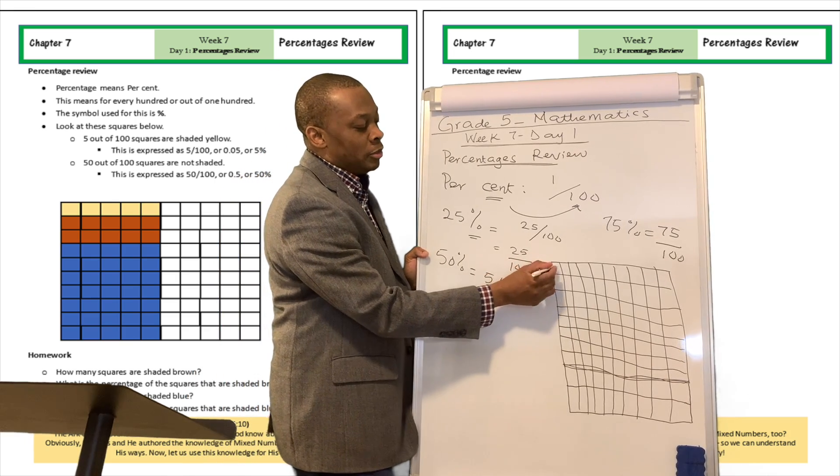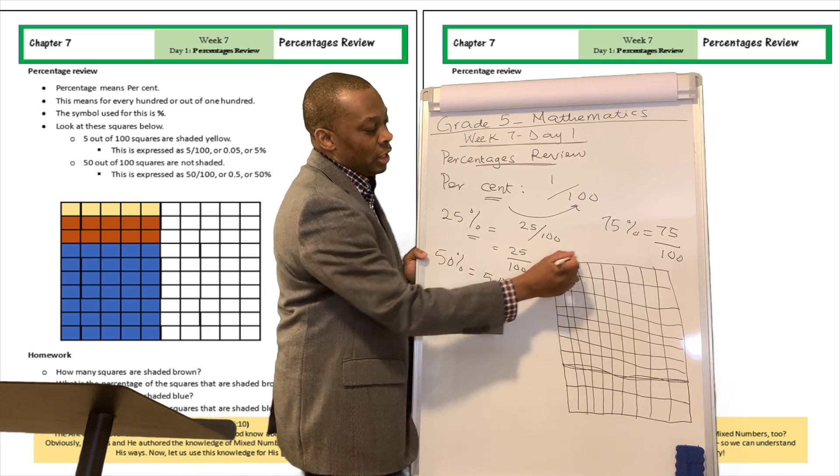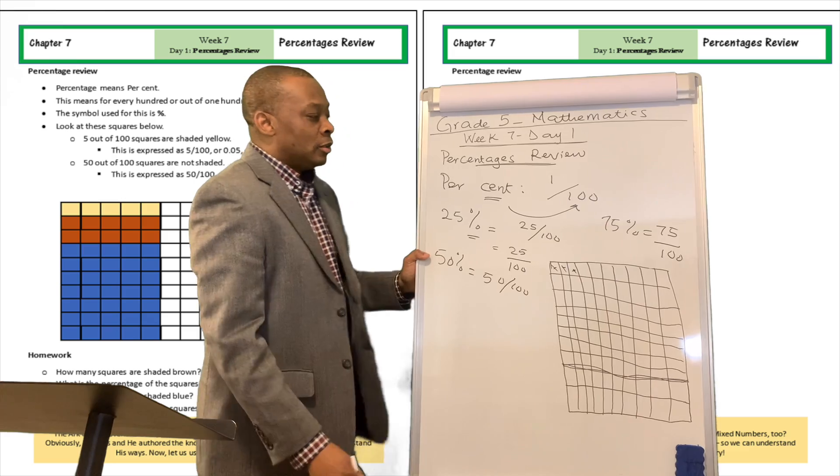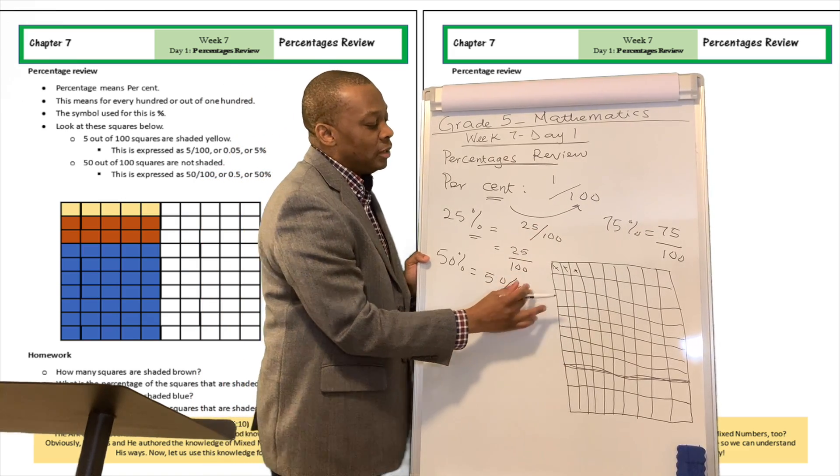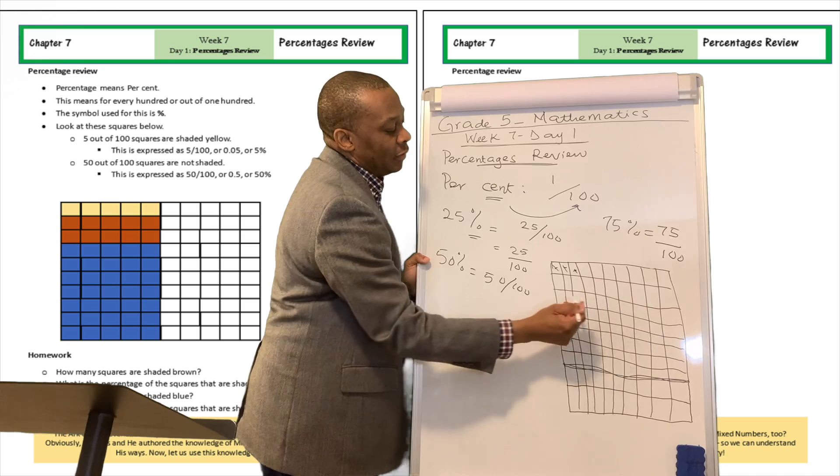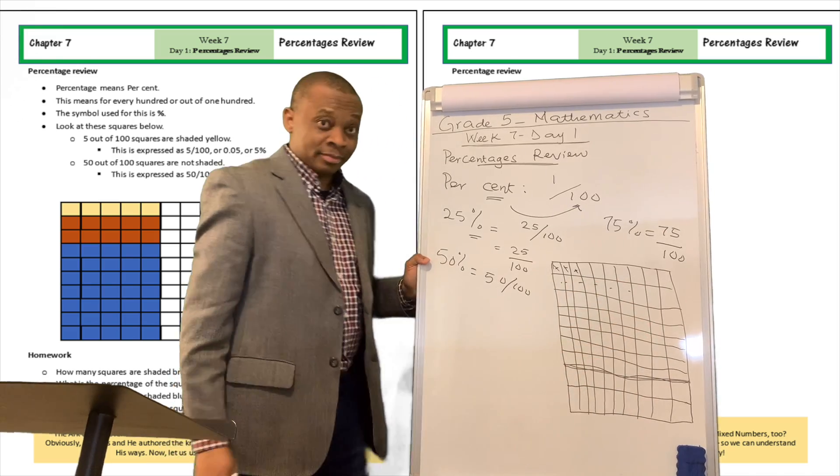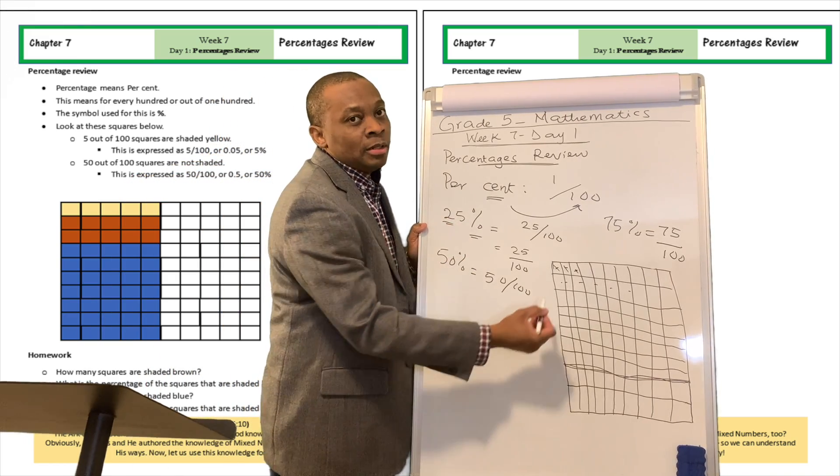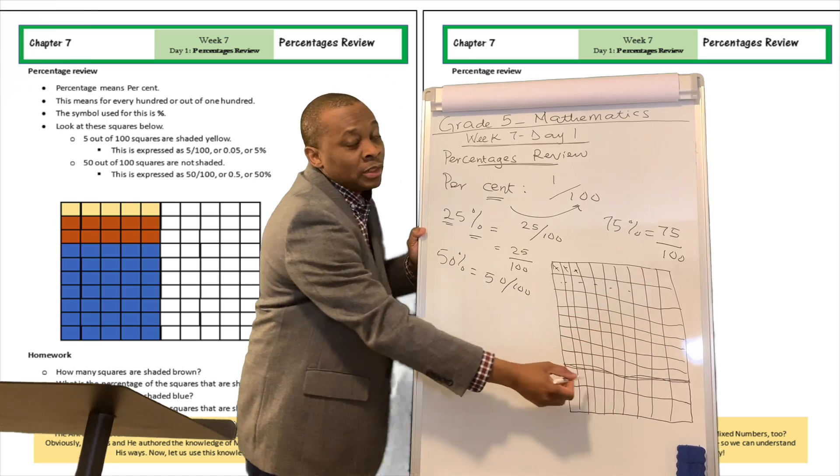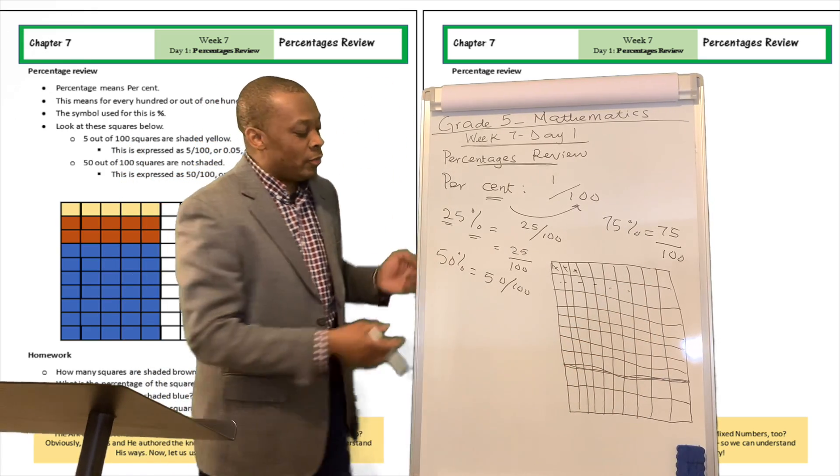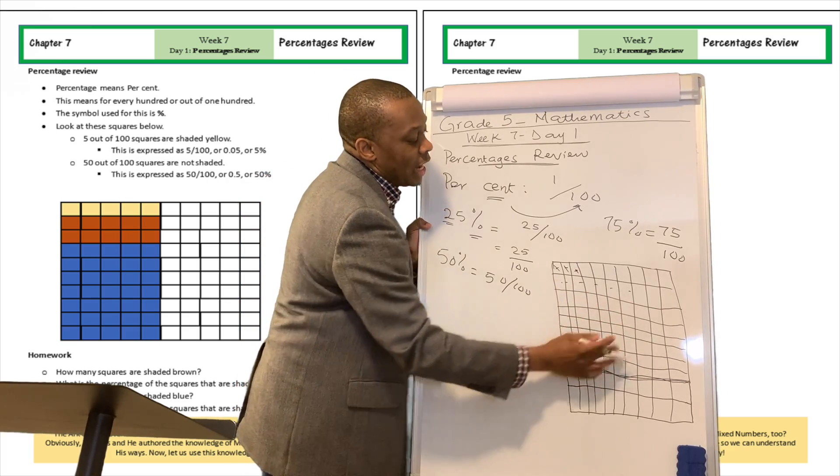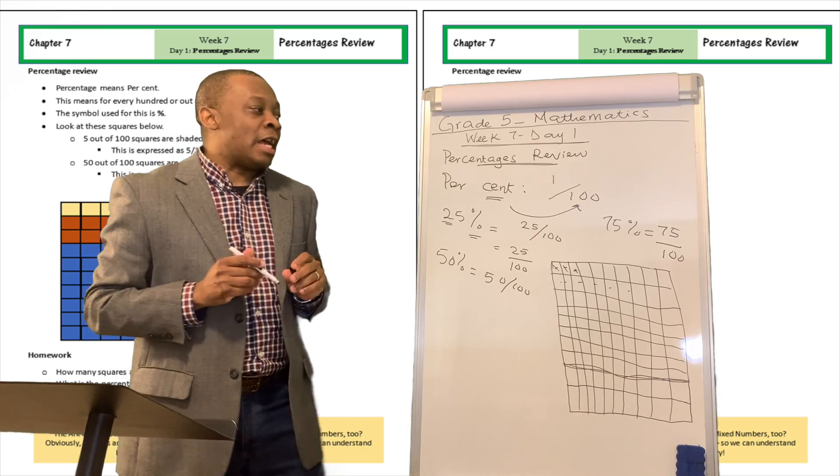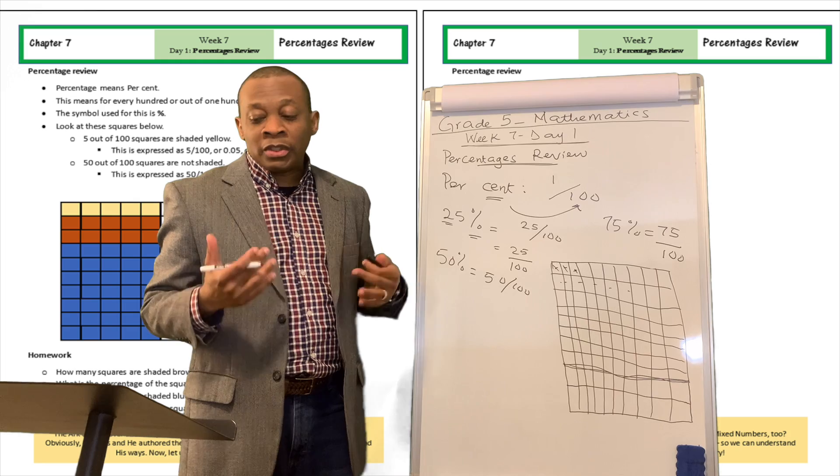Well, there are 100 squares in this big box over there. So you got 100 squares in order to count all the way. So when I'm talking about 75%, that means I'm going to get 75 of these little squares shaded. When I'm talking about 25%, I'm talking about getting 25 of these little squares shaded. When I'm talking about 50%, I'm talking about getting 50 out of 100 squares shaded.